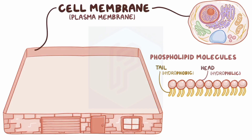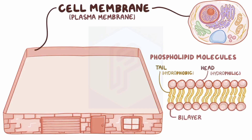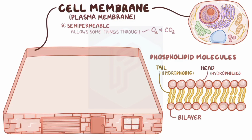In water, phospholipids form a bilayer, where the hydrophobic tails are oriented inwards where there's no water, and the hydrophilic heads orient themselves outwards in contact with water molecules. So the plasma membrane forms a wall with water on both sides. This wall is semi-permeable, meaning it allows some things to go through, like oxygen or carbon dioxide, but does not allow other things through, like glucose and sugars.